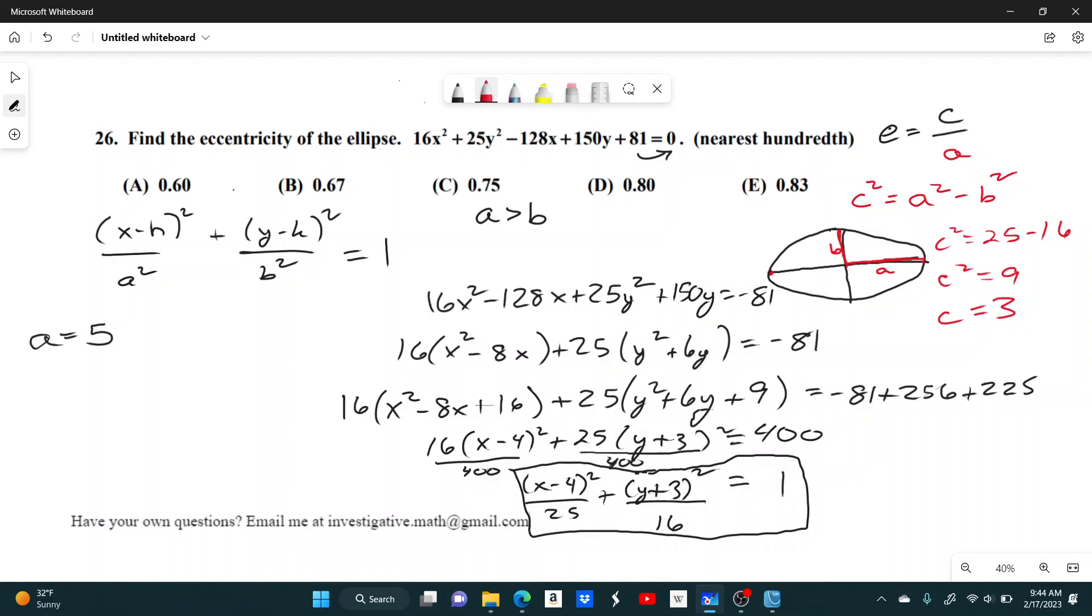So now we have c, and we have a. And now we can just divide them. Eccentricity equals c over a equals 3 over 5, which equals 0.6. Oof. That was a lot of math, but we got to the answer.